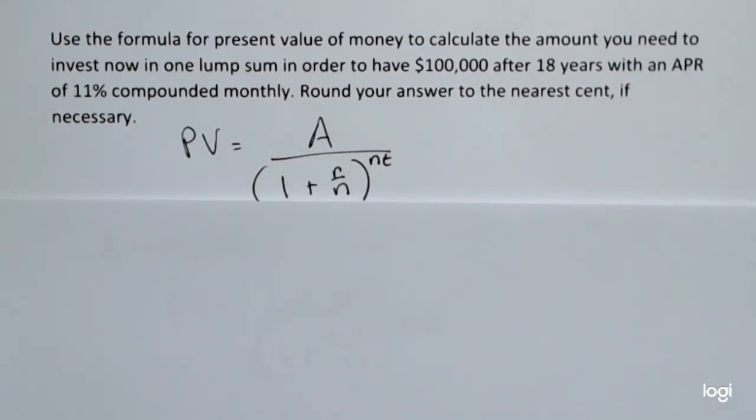Use the formula for present value of money to calculate the amount you need to invest now in one lump sum in order to have $100,000 after 18 years with an APR of 11% compounded monthly.